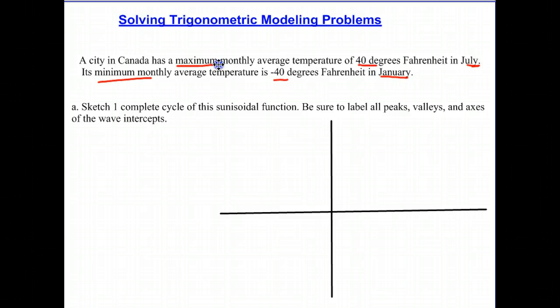Let's label our graph. January is month one, then February, March, April, May, June, July, August, September, October, November, December. We're going up to a maximum of 40 degrees and negative 40 degrees. There's a maximum temperature of 40 degrees in July at month seven, and a minimum temperature of negative 40 degrees in January at month one.